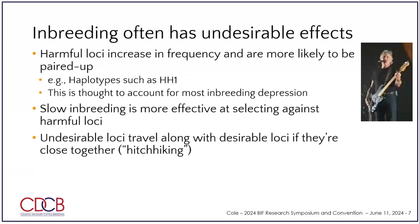This is a problem because inbreeding does have undesirable effects. The biggest problem is when we uncover loci that have harmful effects or have a depressing effect on a particular trait. We have a whole slew of these in dairy that we've discovered just since genomics started in 2009 — Holstein Haplotype One and many others, like spina bifida and mule foot, discovered before genomics. The doubling up of these recessive loci is thought to be the cause of most inbreeding depression.